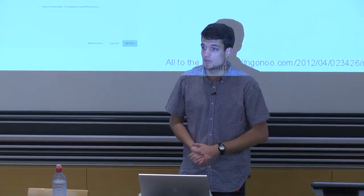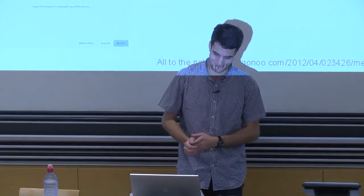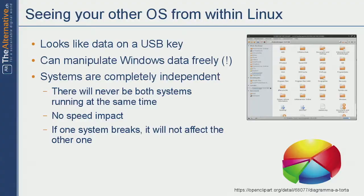A Windows virus will not be able to run on your Linux system — it's incompatible. And if a Windows system is broken, you still have your Linux. Also, if you have spyware like Windows 10 installed, the Linux part will not be affected. Linux will recognize the other operating system and it looks like a USB key — like a second hard disk — and you can move around any file. The Windows protection is completely turned off, so you can press delete on your Windows folder and it gets deleted. Watch out.